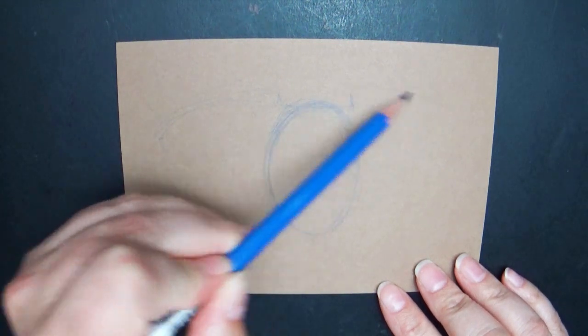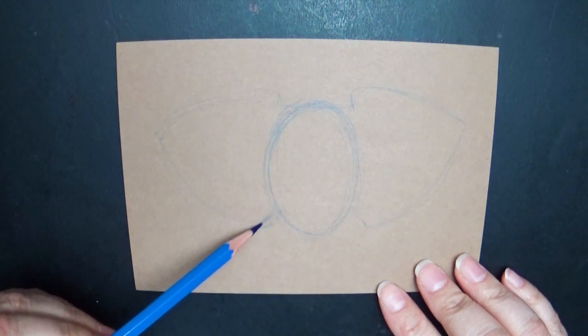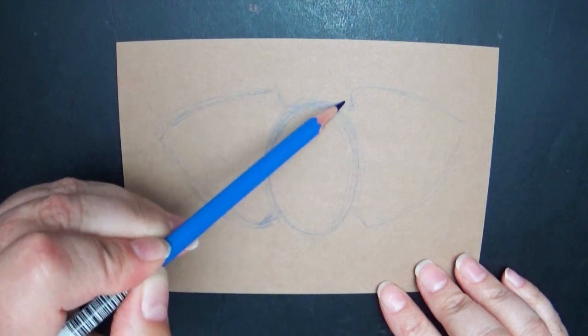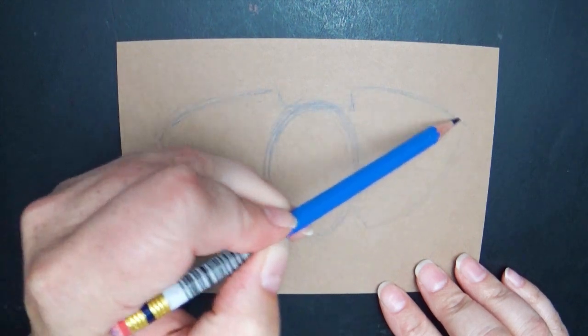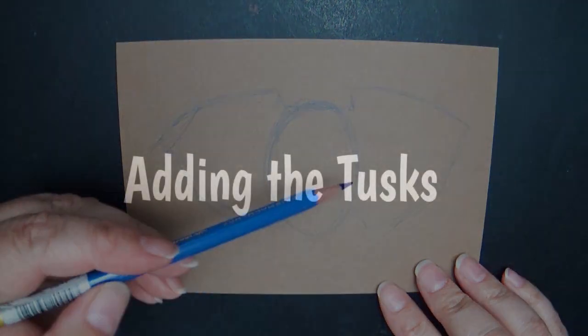Instead of just drawing one ear super detailed and then going over and drawing the second ear really detailed, I found just drawing out the basic shape first can help me to get them to look similar. It's really hard to make them look exact but I found similar is good. I can handle the similar.